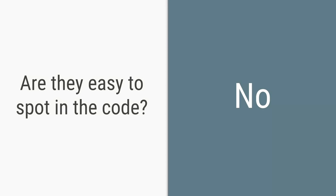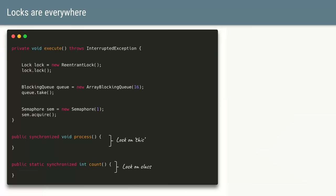Based on this example, we might think it's easy to spot a deadlock at compile time while coding. Unfortunately the answer is no, and there are multiple reasons for this. First, Java comes with multiple lock types.